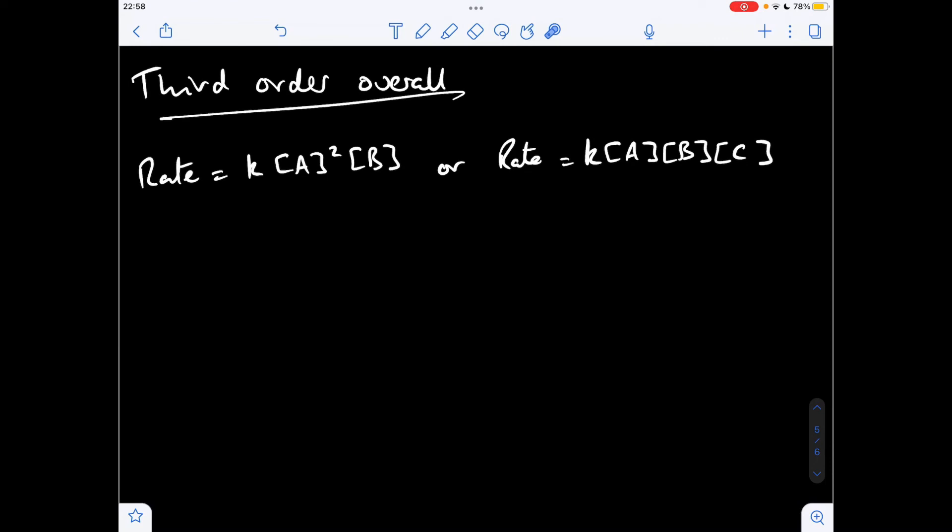And finally third order overall. So two versions of the rate equation. So you could have two reactants, one second order, one first, overall order two plus one, so third. Or you could have three individual reactants all at first order. So again I'm going to use this version of the rate equation to explain the units. The rearranged formula for K is rate over the product of those three concentrations.